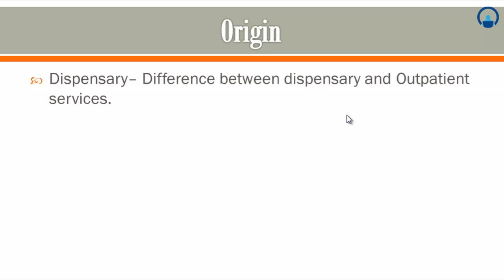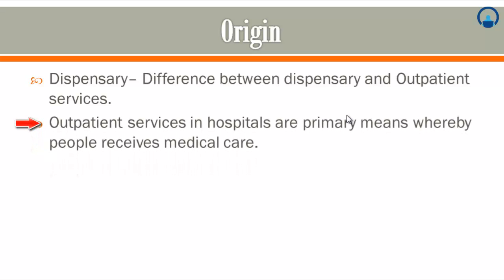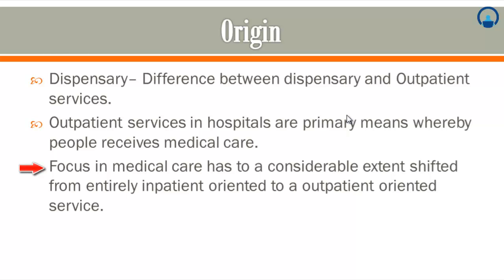Outpatient services in hospitals are primarily the means whereby people receive medical care — it is actually primary care. When we fall sick, we go to the hospital, the doctor examines us and gives a prescription, and we come back the same day. This is called outpatient services: a patient going to the hospital for medical care on an outpatient or outdoor basis.